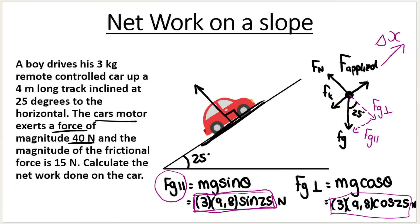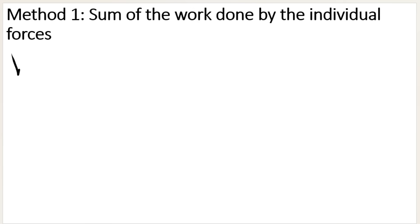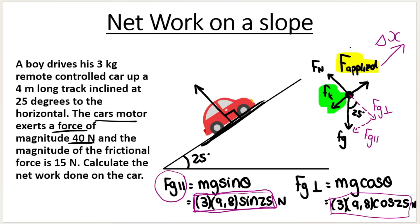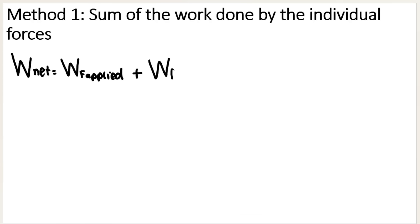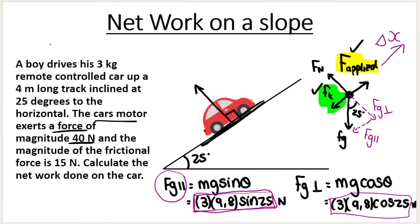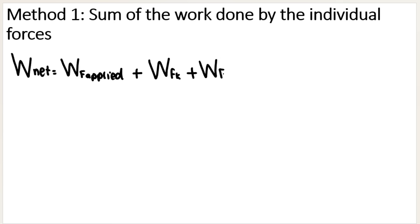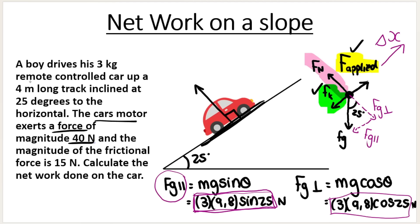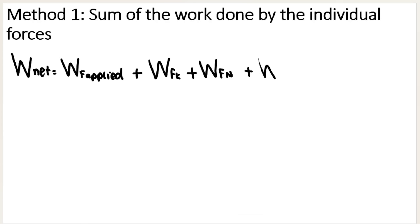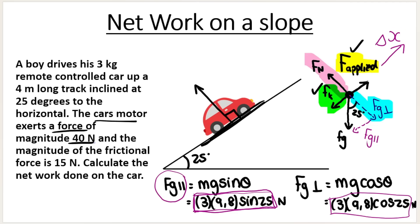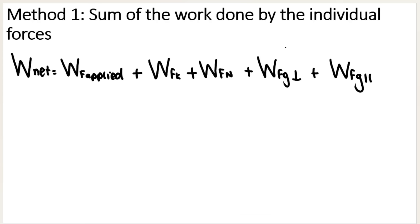Now let's jump into the question. I need to calculate the net work done on this car. Net work equals the work done by each individual force. I have an applied force, a frictional force, a normal force, and instead of the full gravitational force, I'll use the work done by Fg perpendicular plus the work done by Fg parallel. I'll write my work formula once at the top of my page for the formula mark, and then substitute into it for each force.